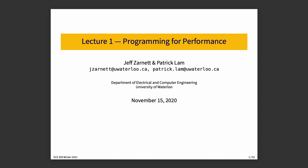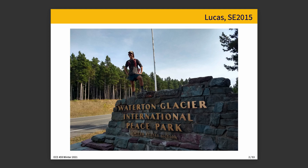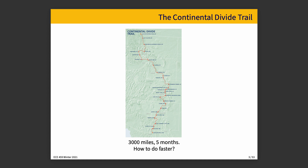We'll start off by thinking for a moment about a real-world example. Here is a picture of Lucas, an SE 2015 graduate, at Waterton Glacier International Peace Park on the Continental Divide Trail. The Continental Divide Trail runs between Glacier National Park in Montana at the Canadian border, all the way down to the Mexican border in New Mexico. The Continental Divide is the dividing line where rivers flow out to the Pacific on the west side and out to the Atlantic, probably through the Mississippi and the Gulf of Mexico, on the east side.